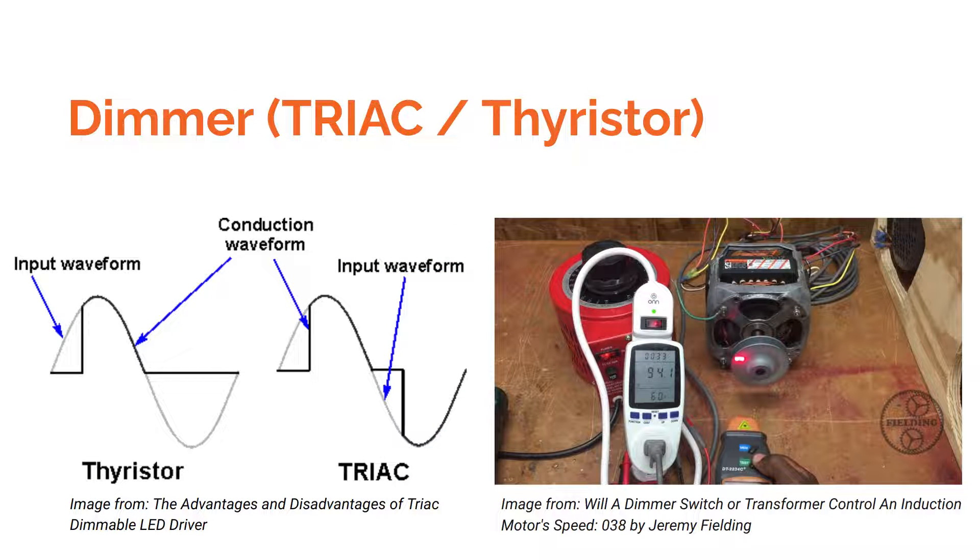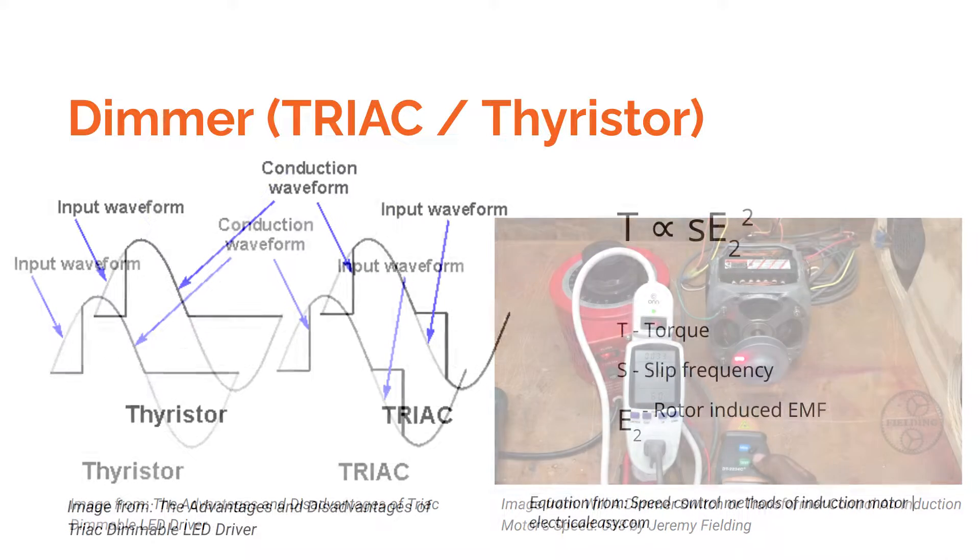I've heard of all sorts of speed controllers, which use dimmers, thyristors, or triacs to cut the AC voltage to the motor, which claim that this will reduce the speed of the motor. If the motor has no load, then the speed won't change. Jeremy Fielding made a nice demonstration about this, if you want to check it out.